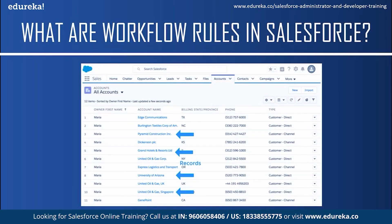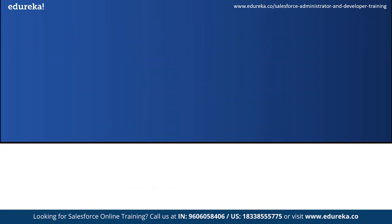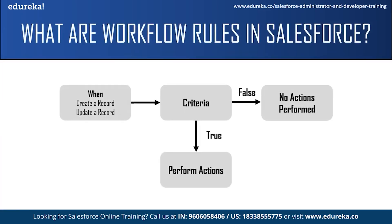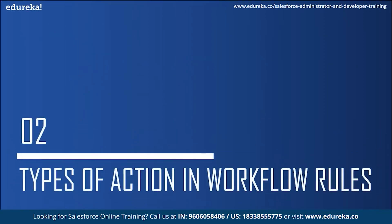Criteria is basically the condition that causes the workflow rule to run. Only if the condition is true are the actions automatically performed; if the condition is false, the workflow rule does not apply. Actions are automatic tasks which are performed after the criteria is met or when the condition is true.